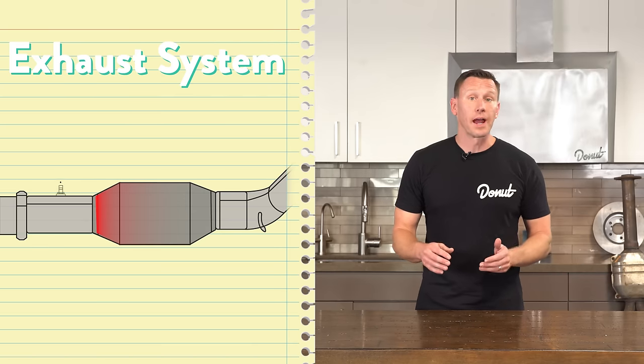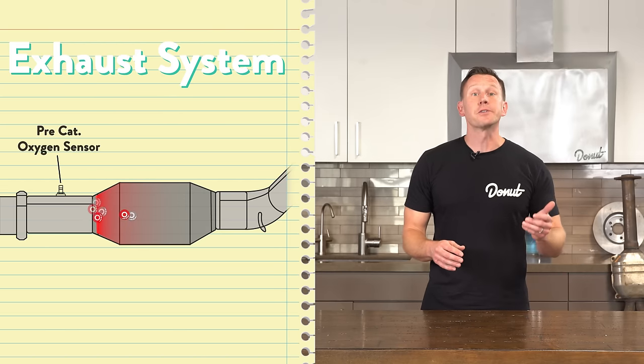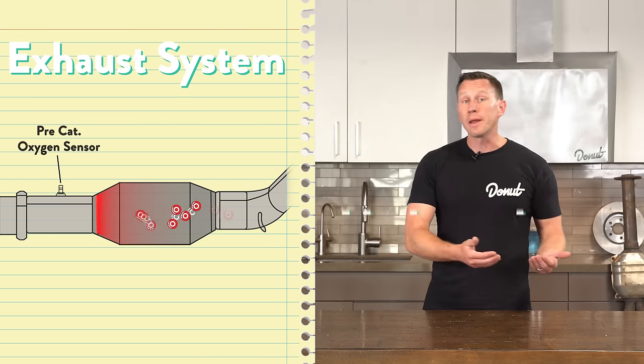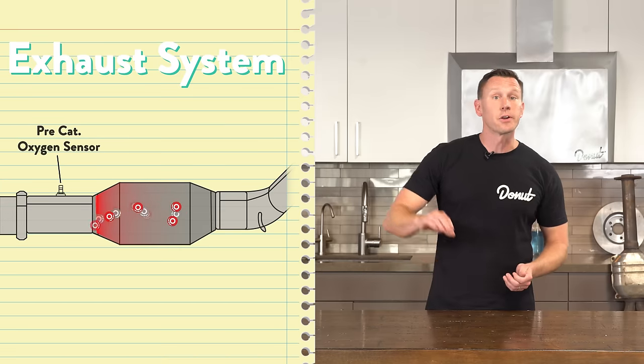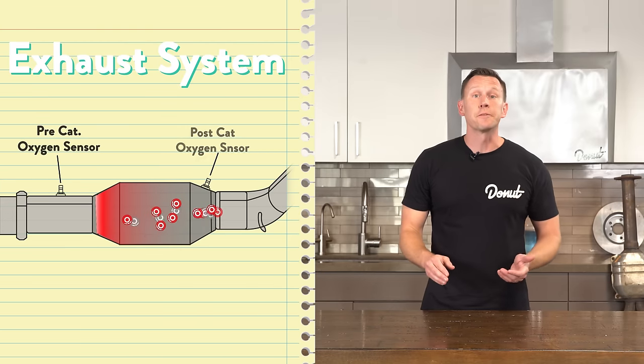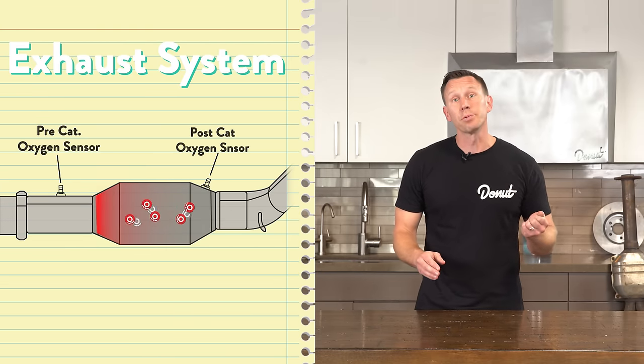The oxygen sensor before the CAT lets your car know if there's enough oxygen burning the fuel in the engine. If too many hydrocarbons come through, a computer will adjust the mix accordingly. Another oxygen sensor after the CAT lets your engine know if it's pulling in enough oxygen to complete the reactions in the converter. It's all super high-tech and it happens super fast.